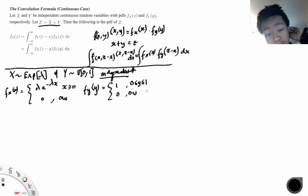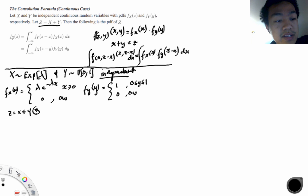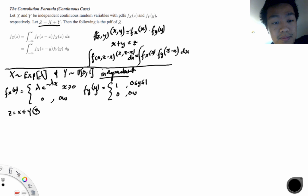Now we're interested in z = x + y. We can utilize the convolution theorem because x and y are independent, continuous, and have continuous density functions. So we set up fz as the integral from minus infinity to infinity of fy(z-x) * fx(x) dx.